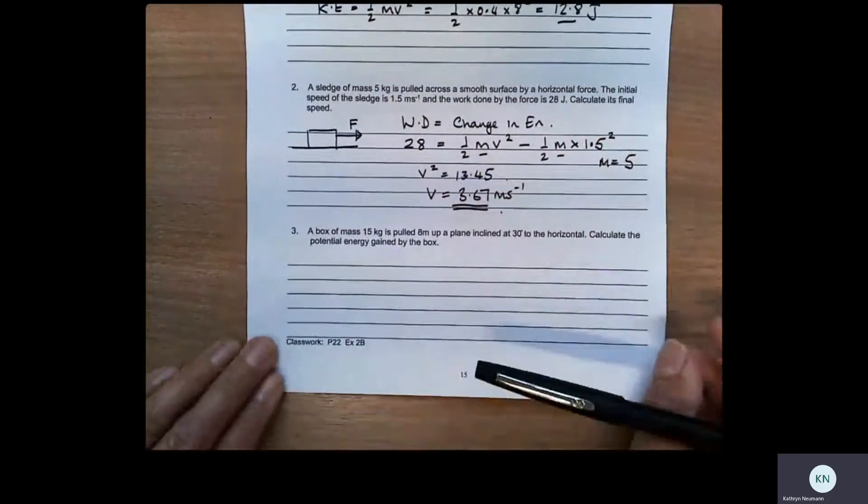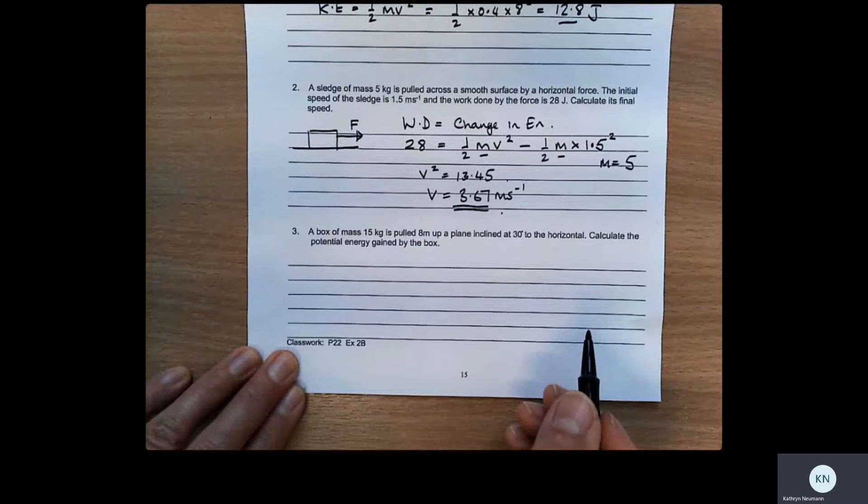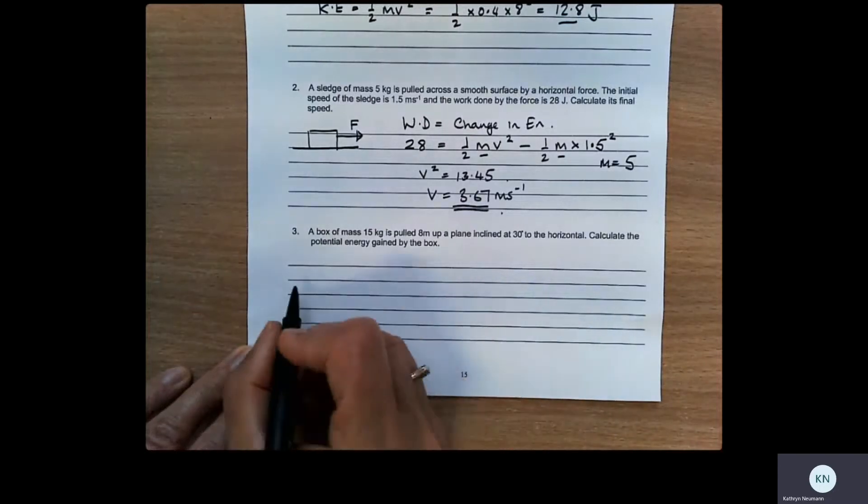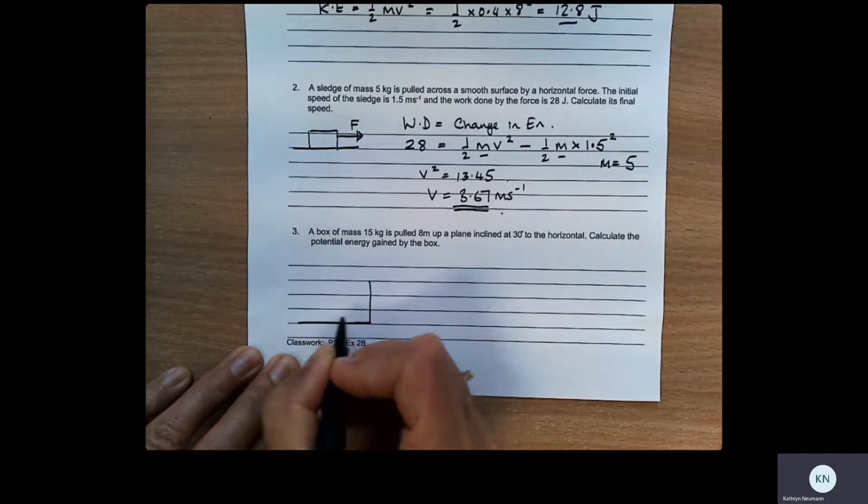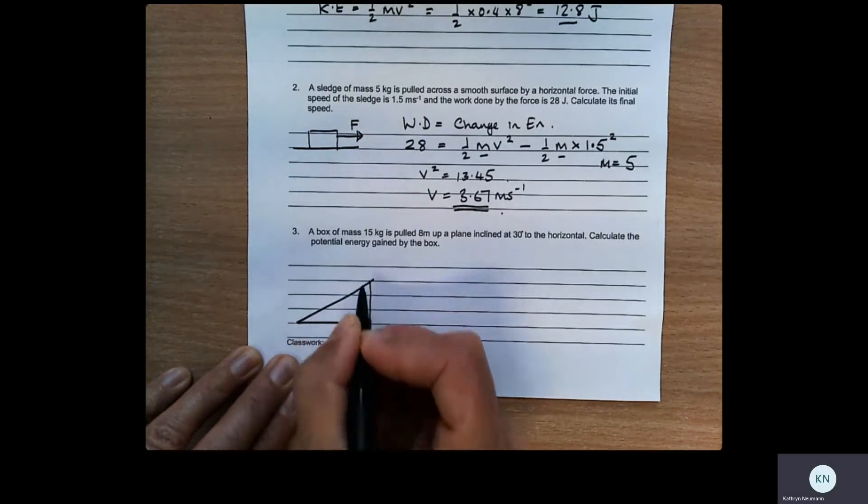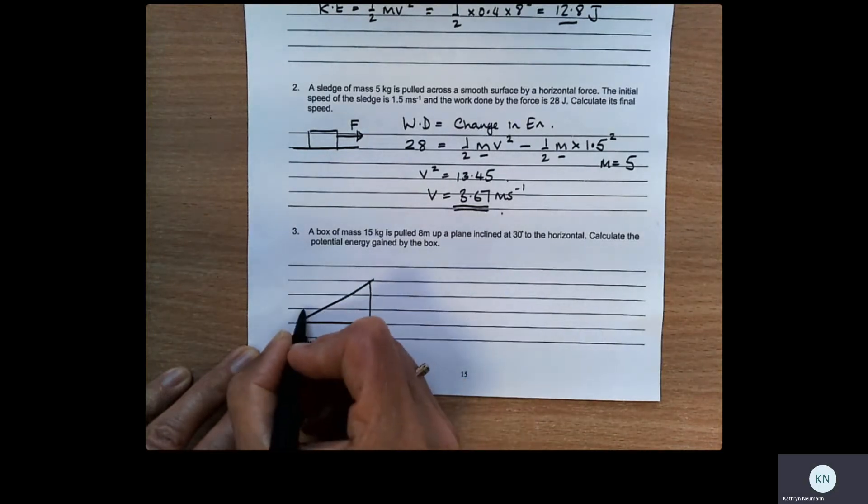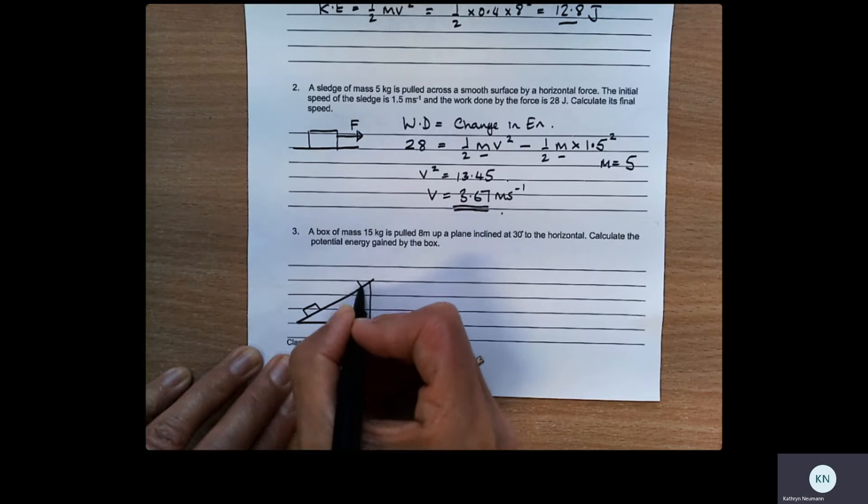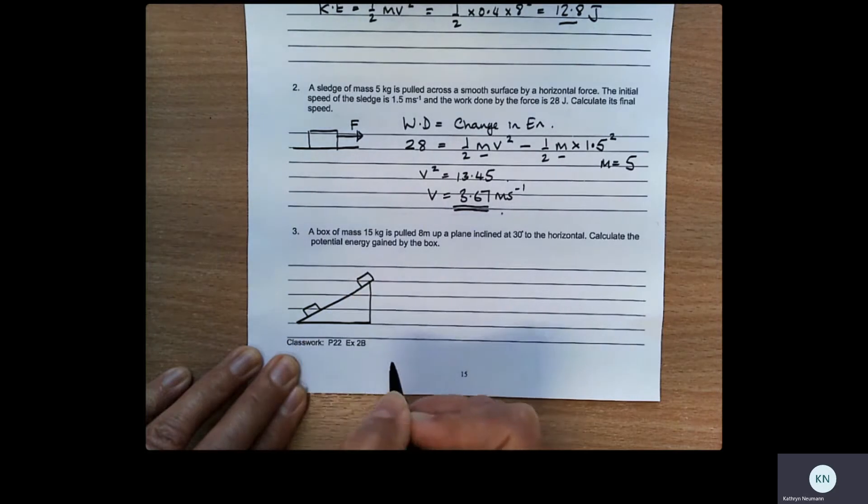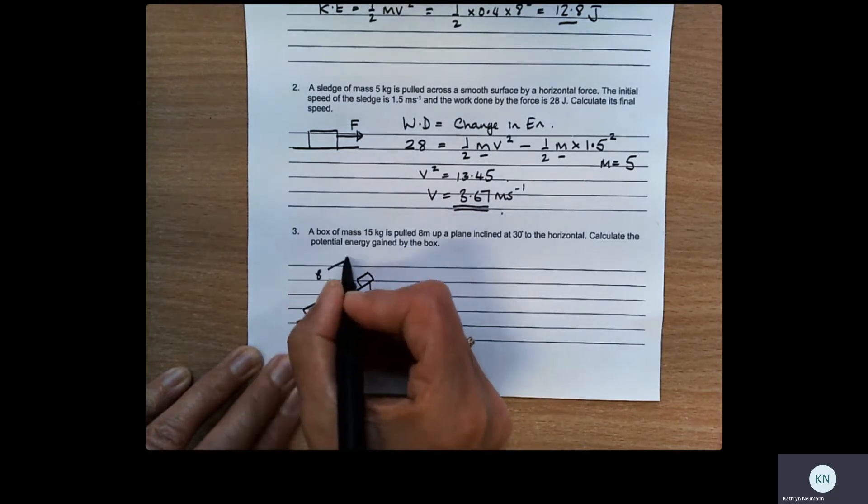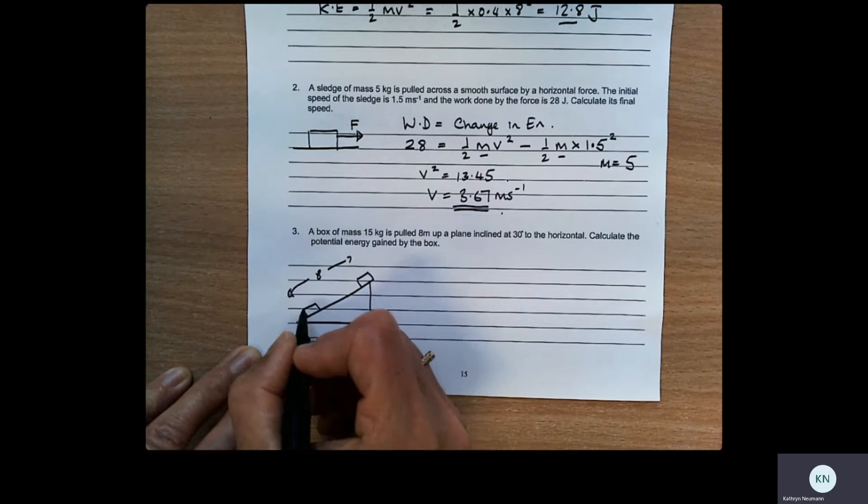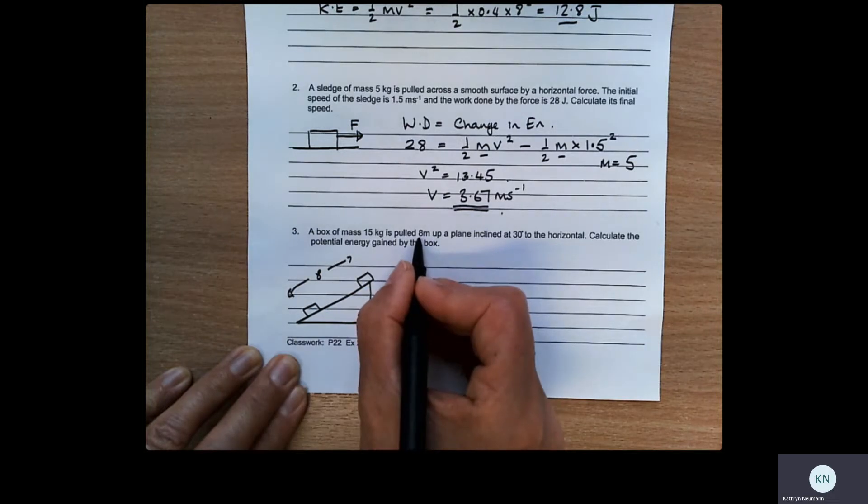Last question. We've got a box being pulled up an inclined plane. So let's have a quick diagram. So the box moves from here up to here. And we know that that distance is 8 meters. Because we're told that in the question.